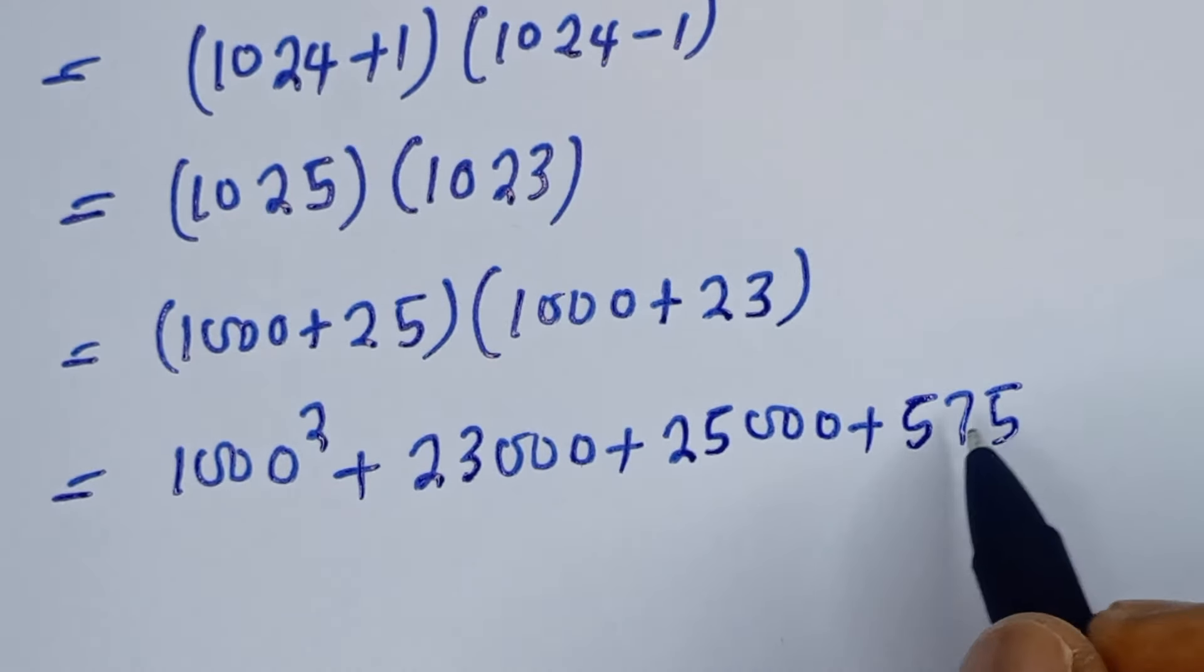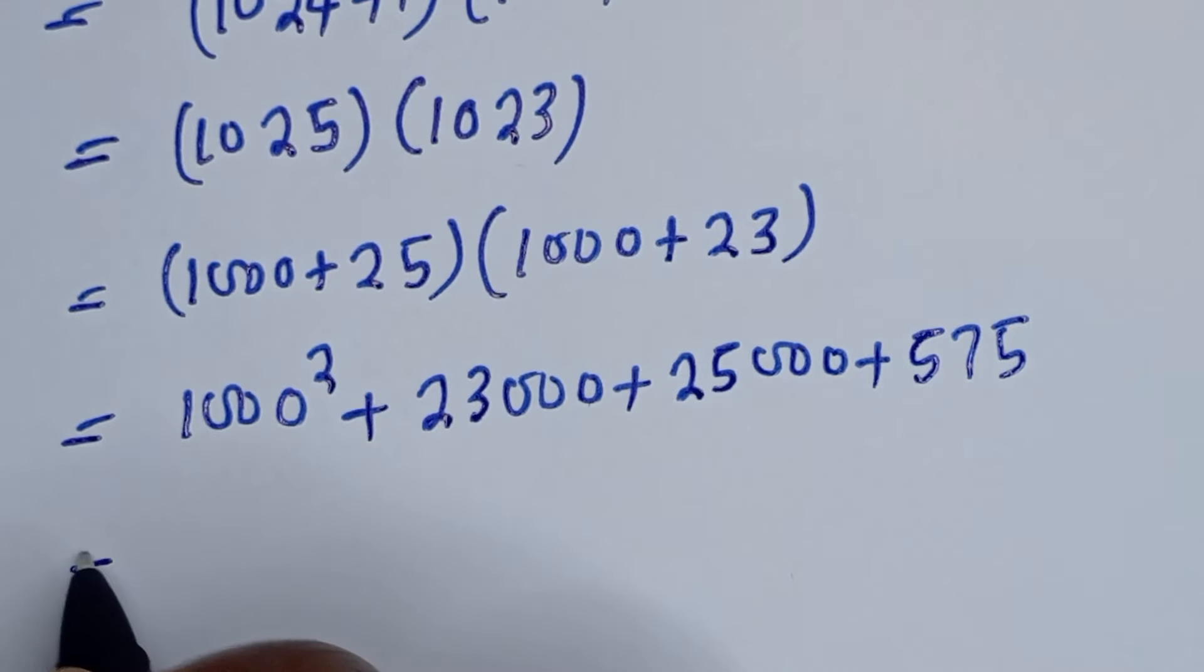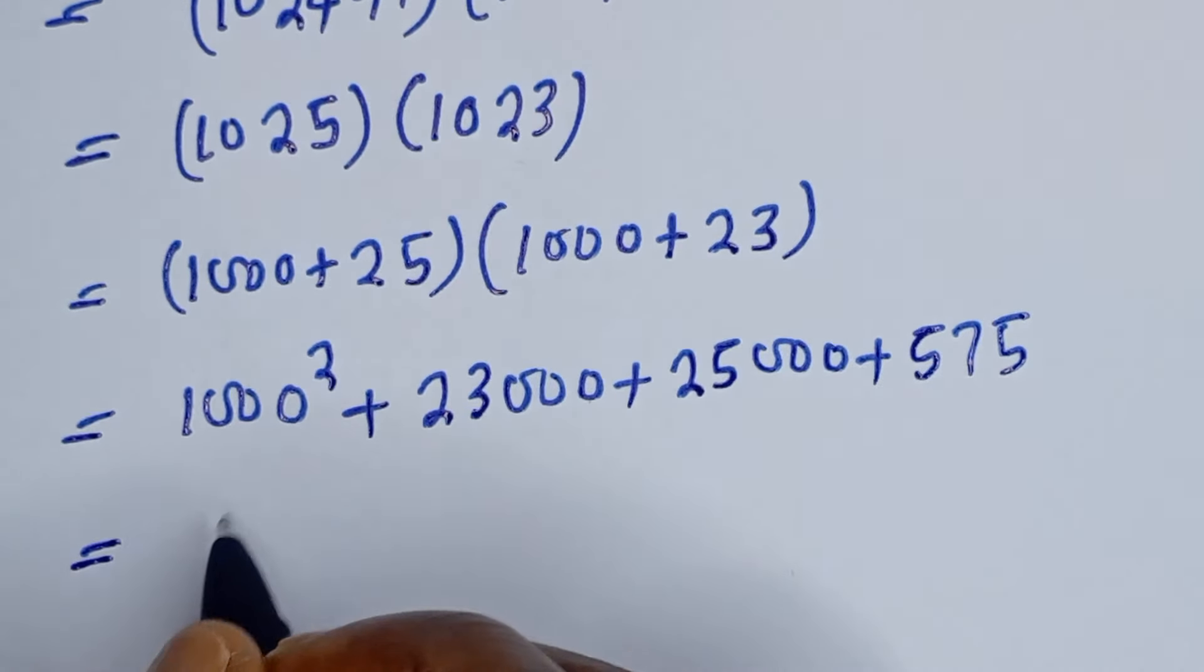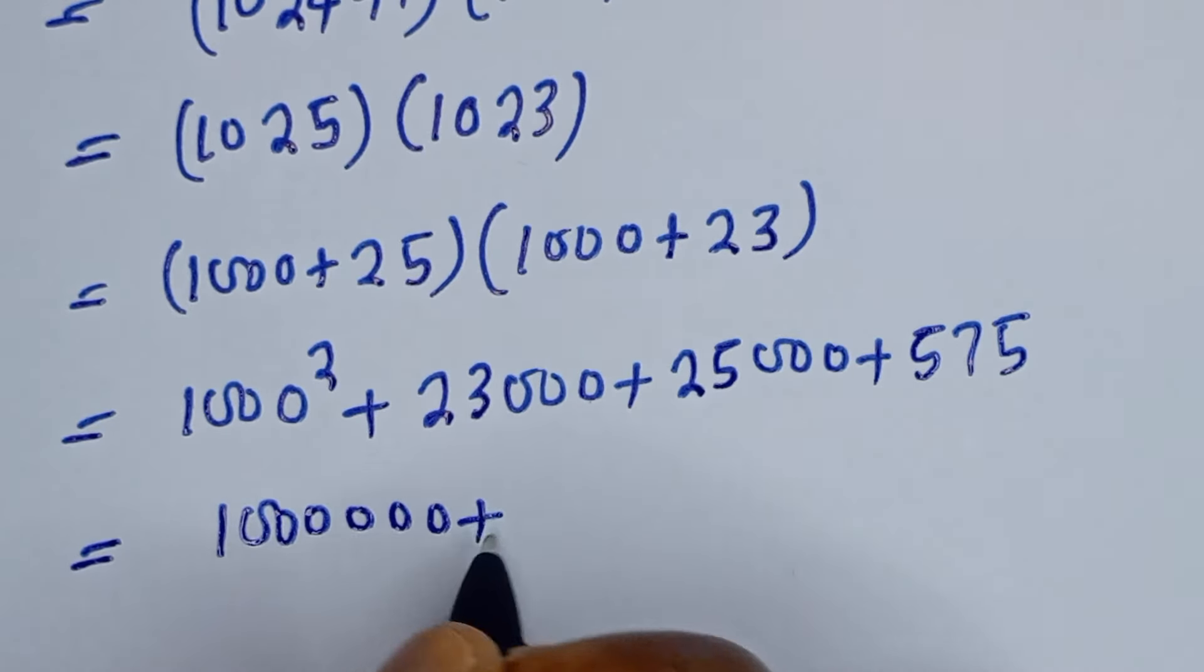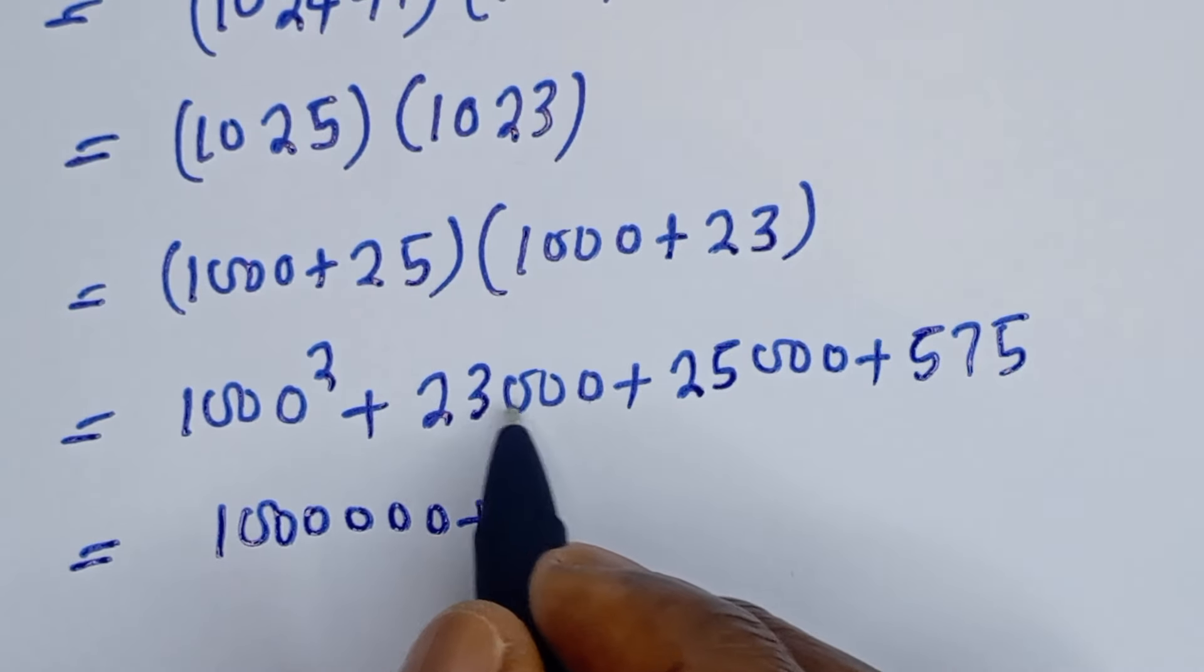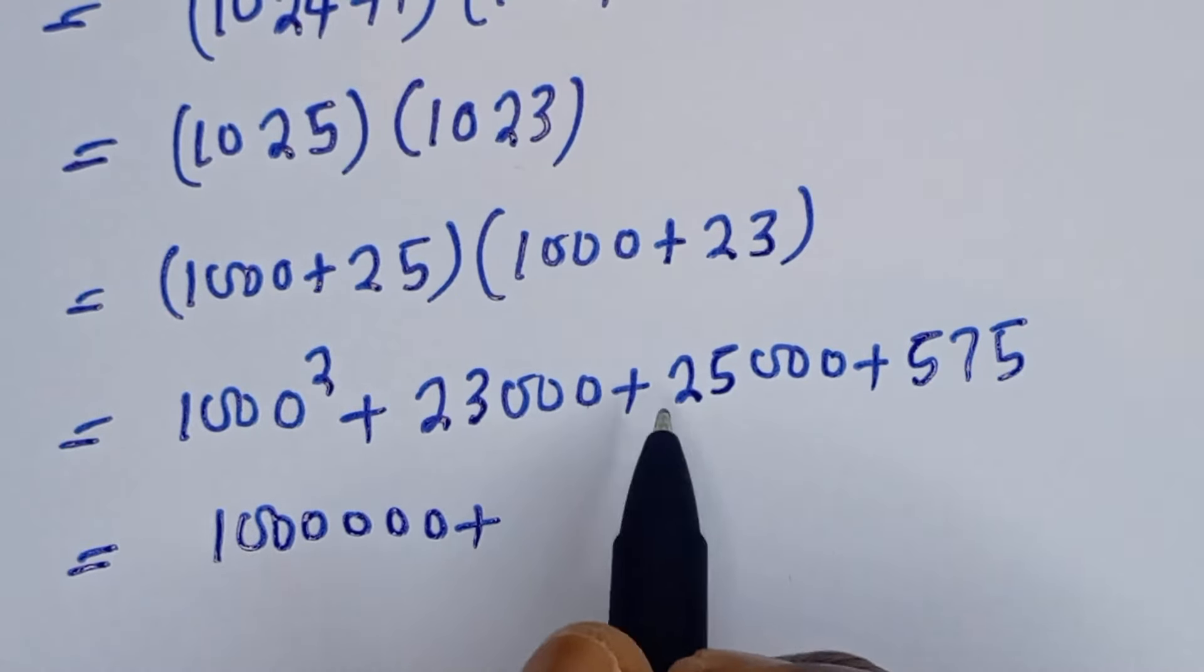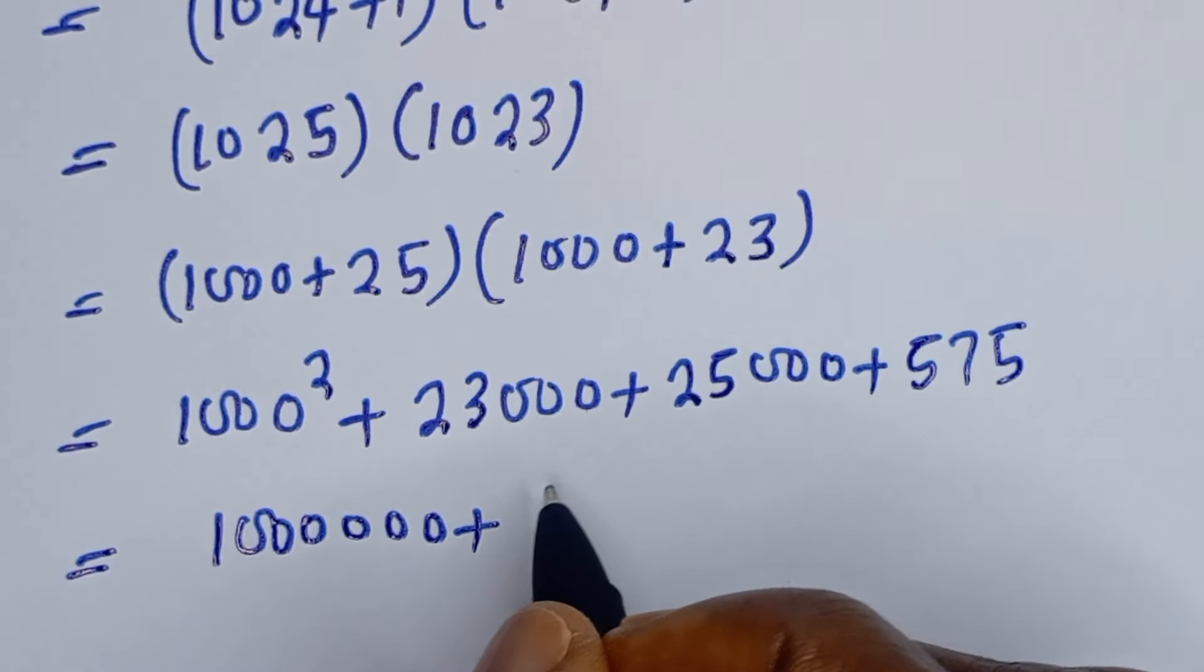Then this is equal to 1000 squared is 1 million, plus 23,000 plus 25,000, this is 48,000.